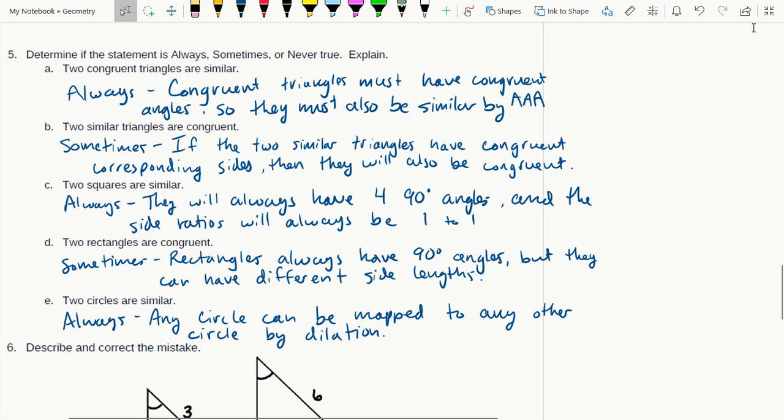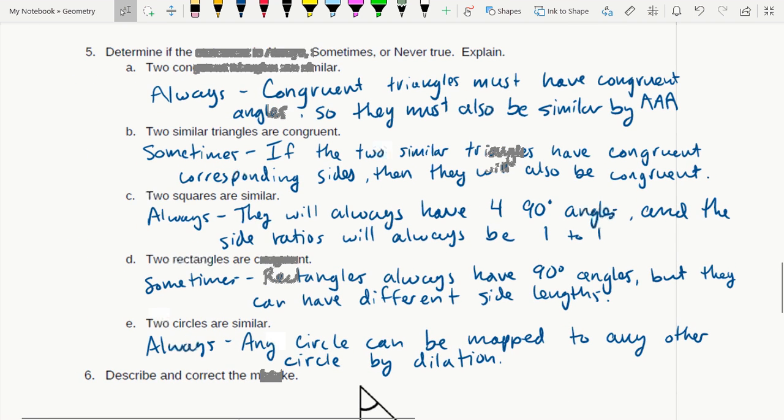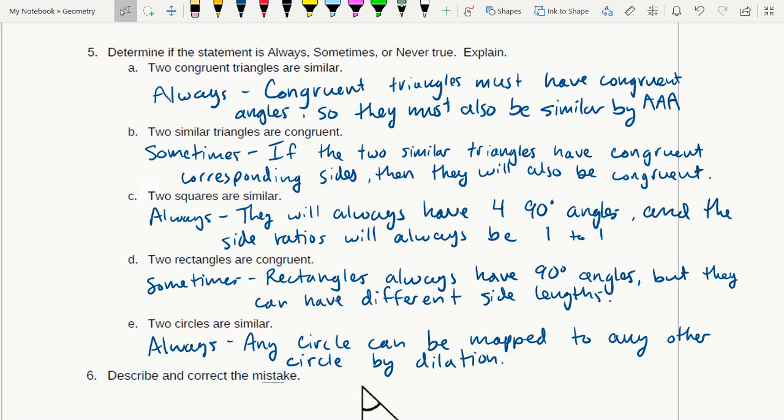Alright, hey guys, so let's talk about number five here. I have these things written out the way they already are in the key, so I'm not going to rewrite them because it's a lot of writing. Two congruent triangles are similar - that is always true. The thing I want you guys to think about here: